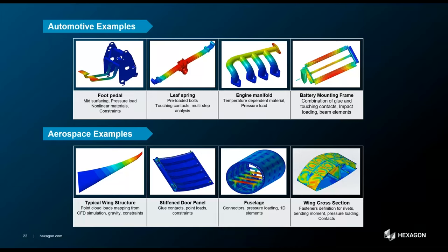From the automotive industry, a pedal box assembly is a good example involving follower forces, non-linear materials, and potentially very large deformations. A leaf spring is a great example of contact and also requires preloaded bolts. An engine manifold uses non-linear materials with temperature-dependent material properties. In the world of batteries, the mounting frame includes quite a bit of contact, including contact with beam elements, and typically requires an impact analysis. In aerospace, typical examples include wingtip deflection with large displacements and local buckling, stiffened door panels with glued connections, fuselage pressure loads with follower forces and local panel buckling, and detailed stress analysis of wings looking at fastener loads.